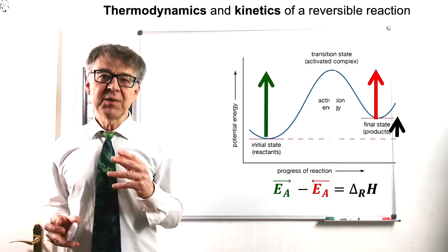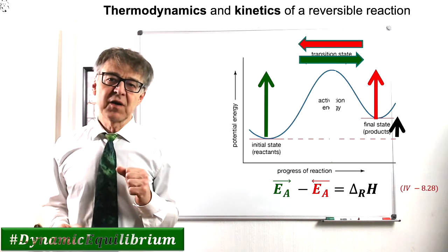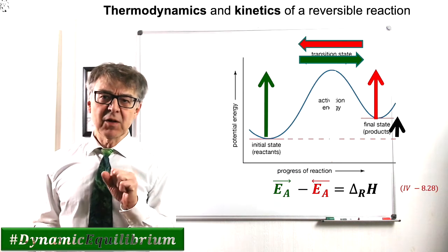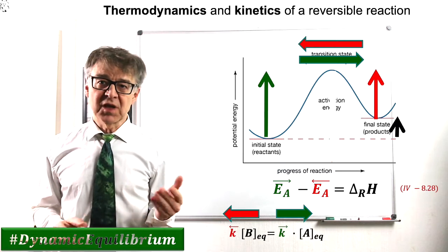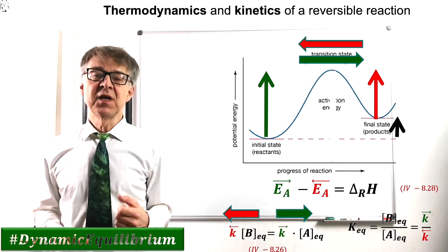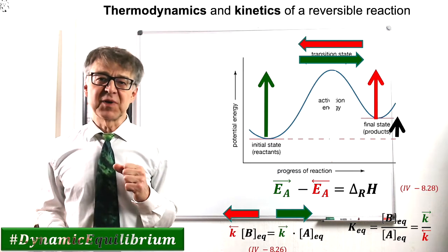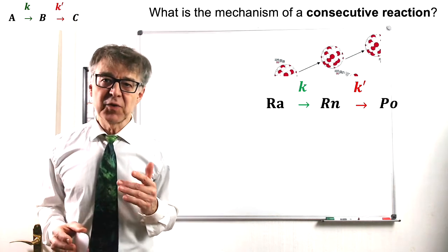In dynamic equilibrium, the rate of the forward reaction is equal to the rate of the reverse reaction. If we combine the two rate laws for equilibrium, we end up with the law of mass action. Equilibrium constant K equals forward reaction rate constant over reverse reaction rate constant.